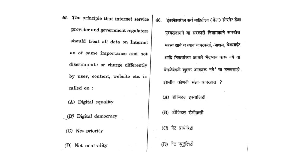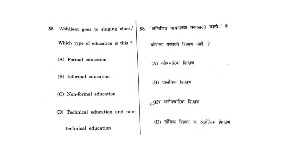For the next question, they have given one definition and asked what it defines. The definition is of net neutrality, so the correct answer is D. Now for the 60th question, the last question of this series: Abhijit goes to a singing class — this type of education is informal education. The correct answer for this question is B.